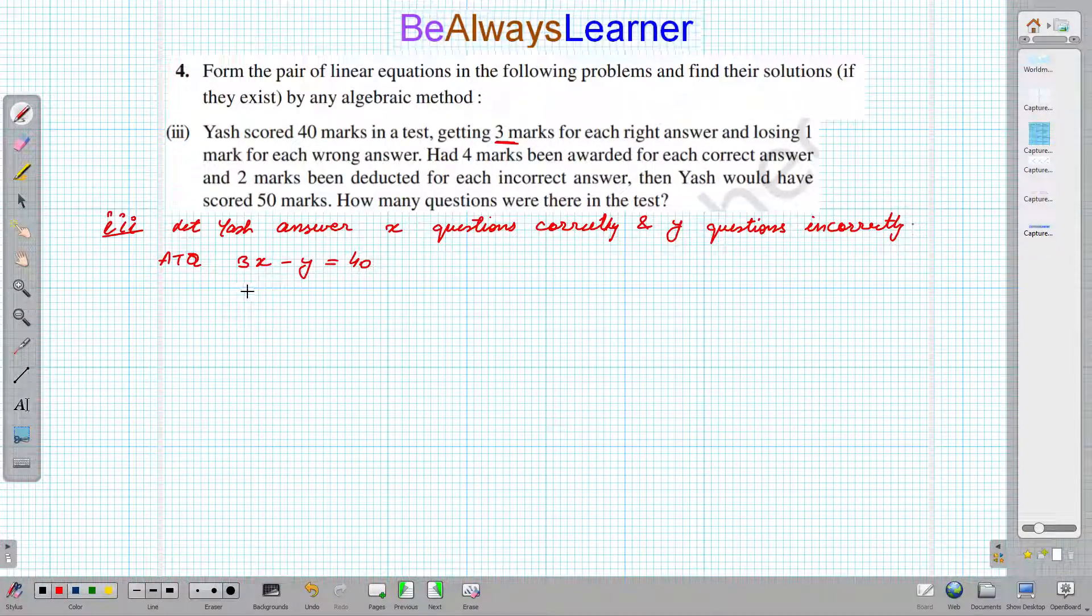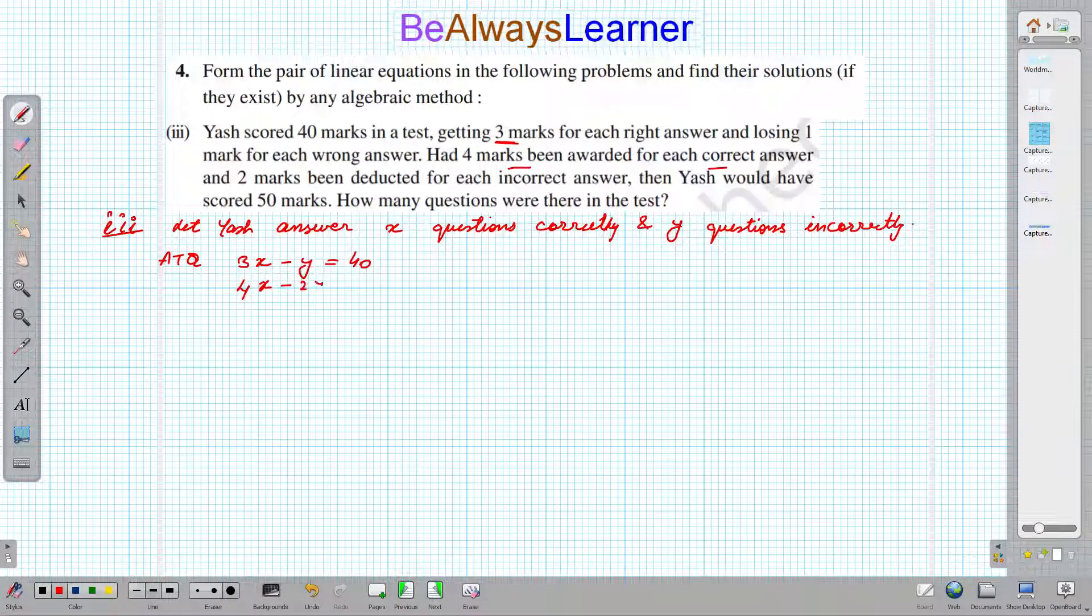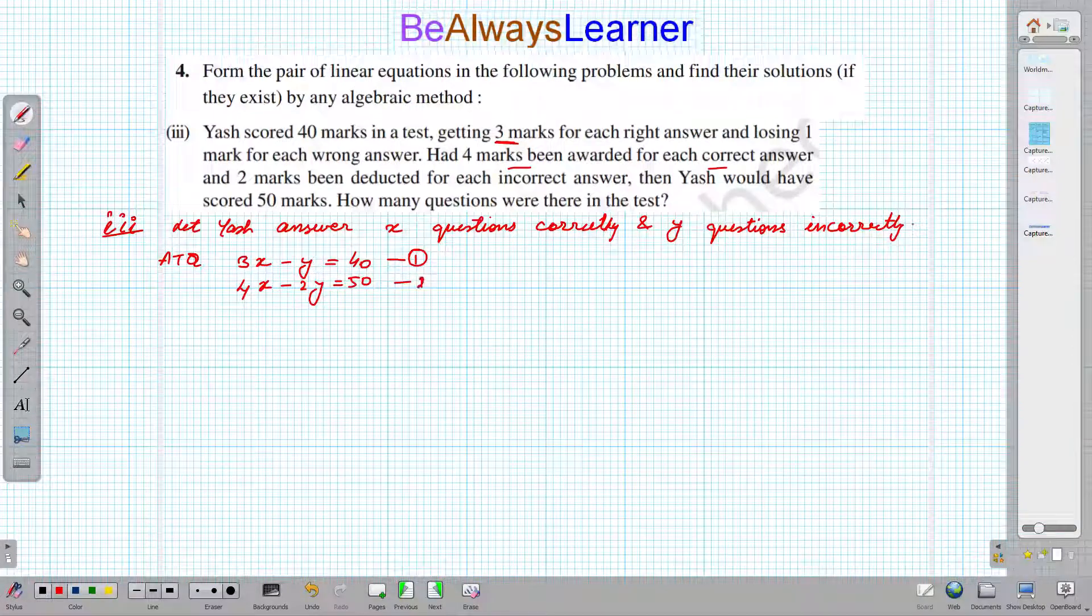If 4 marks are given for correct and 2 marks are deducted for the wrong answer, then it is 50 marks. So 4x minus 2y equals 50.